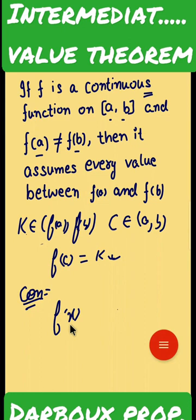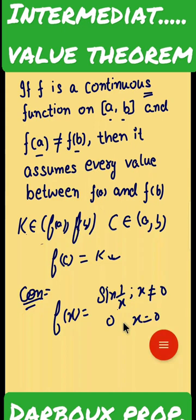sin(1/x) where x ≠ 0, and 0 at x = 0. This function is defined on [-2/π, 2/π] and is not a continuous function.